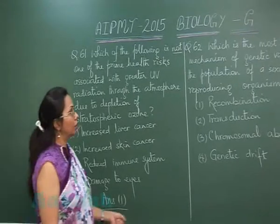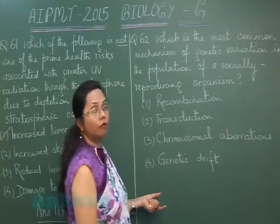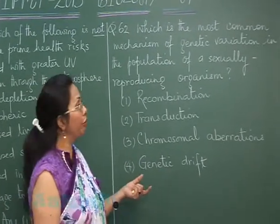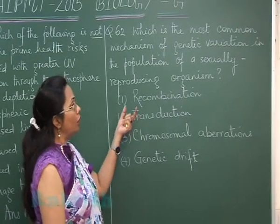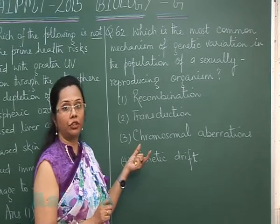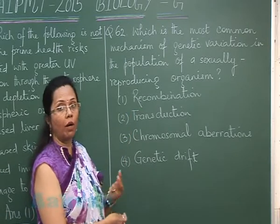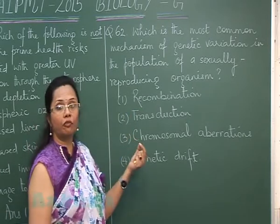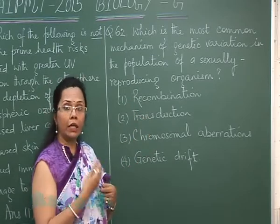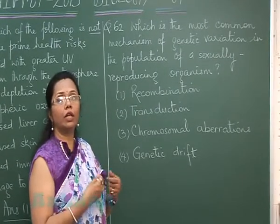Question 62: Which is the most common mechanism of genetic variation in a population of sexually reproducing organisms? The ultimate source of any variation is mutation, but in a sexually reproducing organism, the first source of variation would be recombination. During the pachytene stage of meiosis, there is crossing over, resulting in reshuffling of genes.